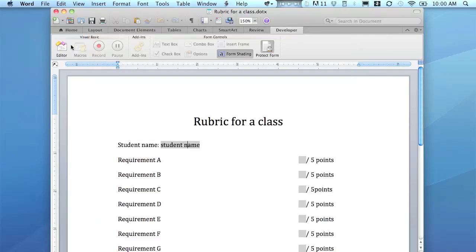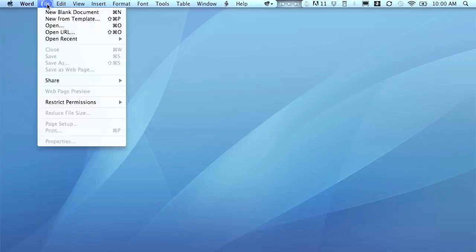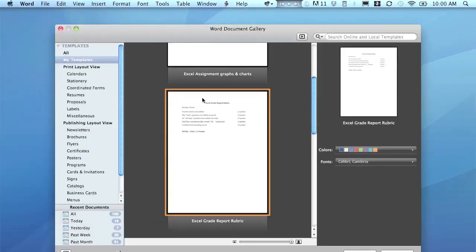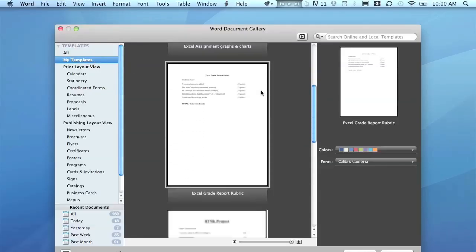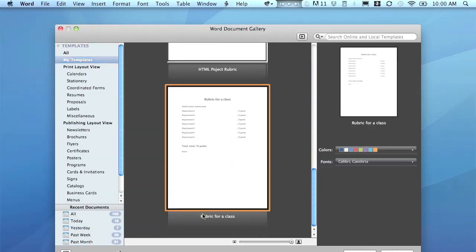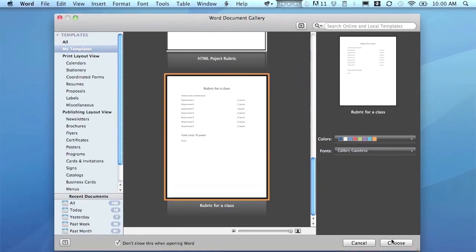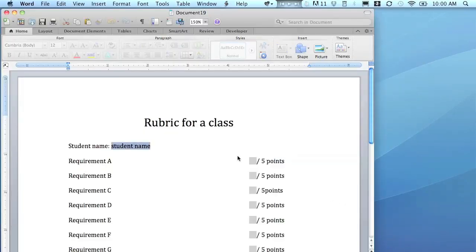What I'm going to do now is close this, and now I'm going to open up my template. So I'm going to go to File, New from Template, right there. Make sure you're on My Templates and just scroll through and find it. Those are just ones that you've created, and then I'm going to click Choose, and there it is.